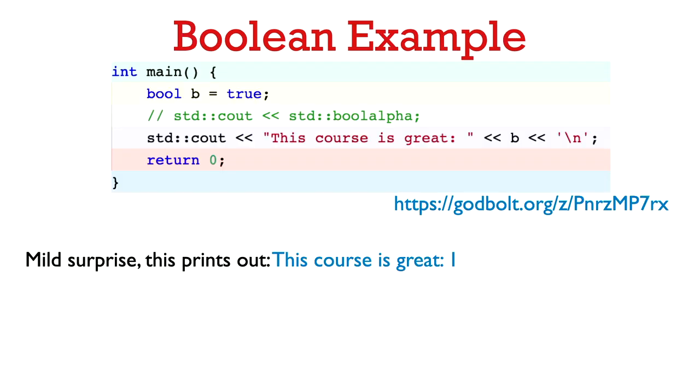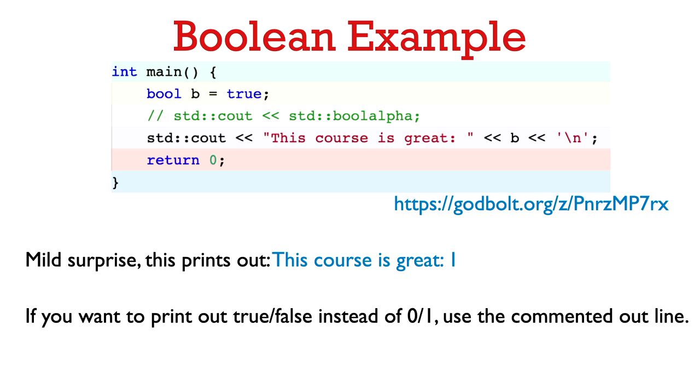Here we initialize a Boolean variable with the value true. And this code has a mild surprise in it. It will print out this course is great 1 instead of this course is great true. And if we were to initialize B to be false, then it would print out this course is great 0 instead of this course is great false. So if you want to print out true or false instead of 0 or 1, then you can comment out this line that's commented there. And then a Boolean will be printed out as true or false instead of 0 or 1.